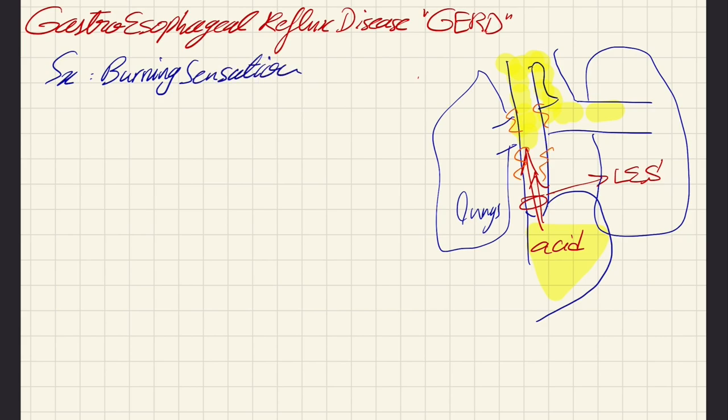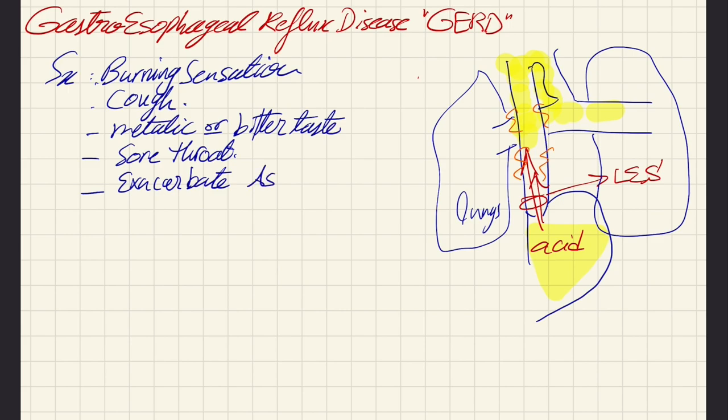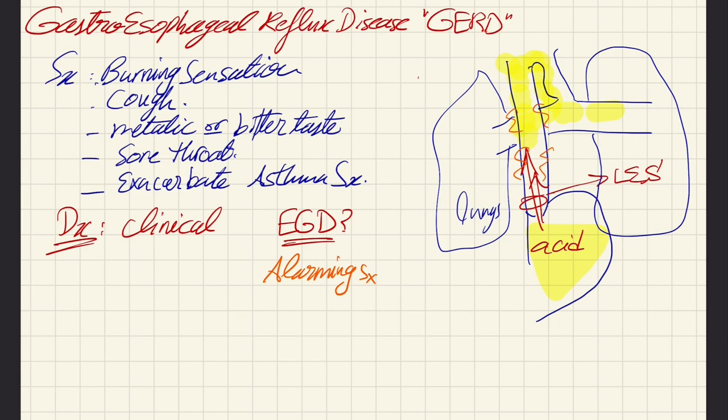As we see in this figure, the acid can reach the pharynx and might also cause micro-aspiration to the lungs. Symptoms include burning sensation, cough, metallic or bitter taste in the mouth, and unique symptoms in asthmatic patients - it can provoke an asthma attack and cause wheezing. It can also cause sore throat because the acid reaches the pharynx and throat.